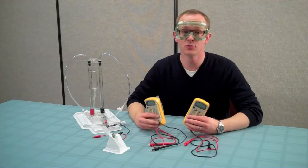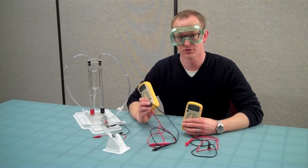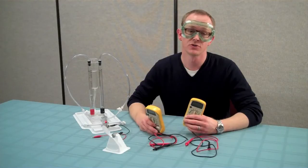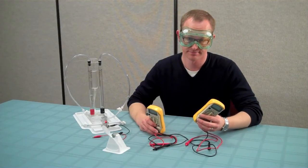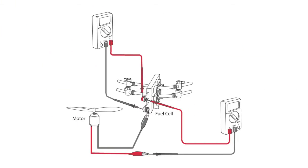At this point, you will need two multimeters. One to measure voltage across the fuel cell, and one to measure current through the fuel cell. Here's an illustration showing how to connect both multimeters to the circuit.